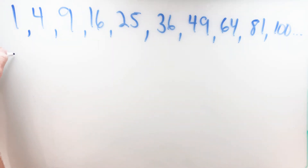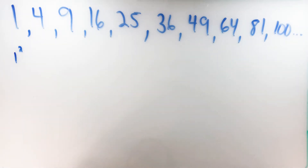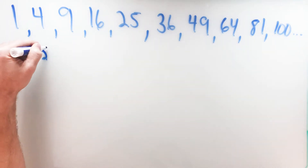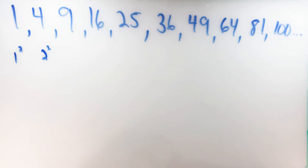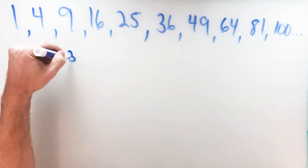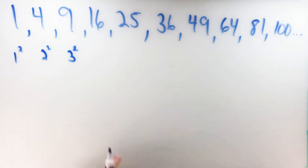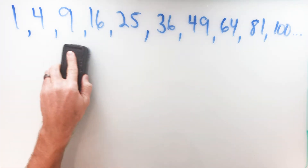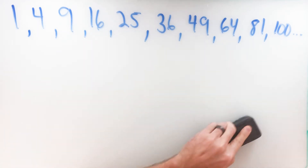Perfect square numbers are numbers that if you multiply a number by itself you end up with these perfect squares. For example, one squared, which just means one times one, is equal to one. Two squared, two times itself, is four. Three squared, three times three, is nine, and so on — four squared, five squared, et cetera. These perfect square numbers are very useful, and we're going to leave that pattern up there to help us out for today's lesson.